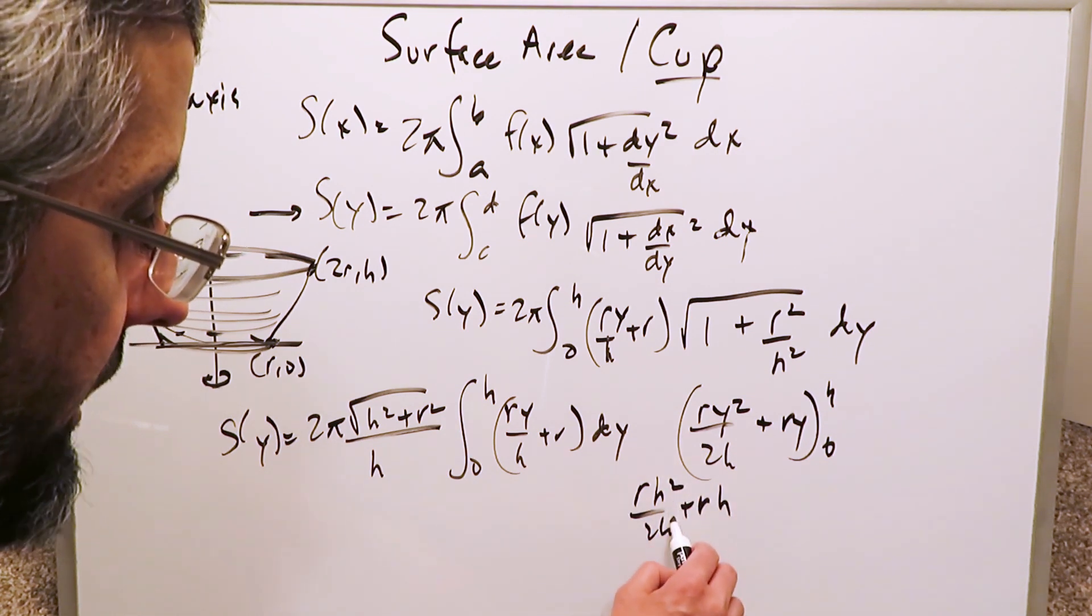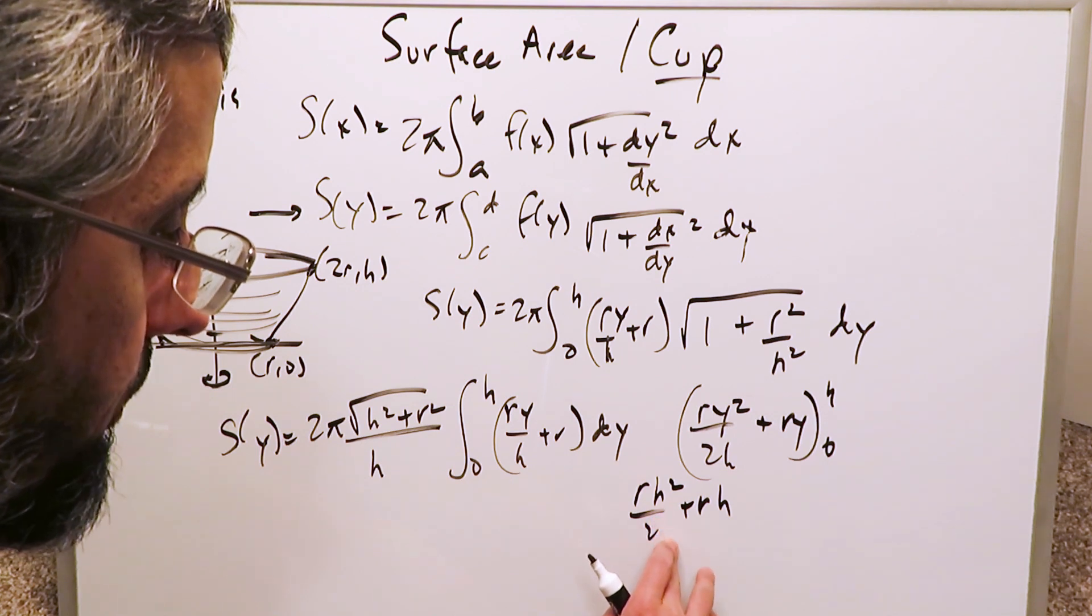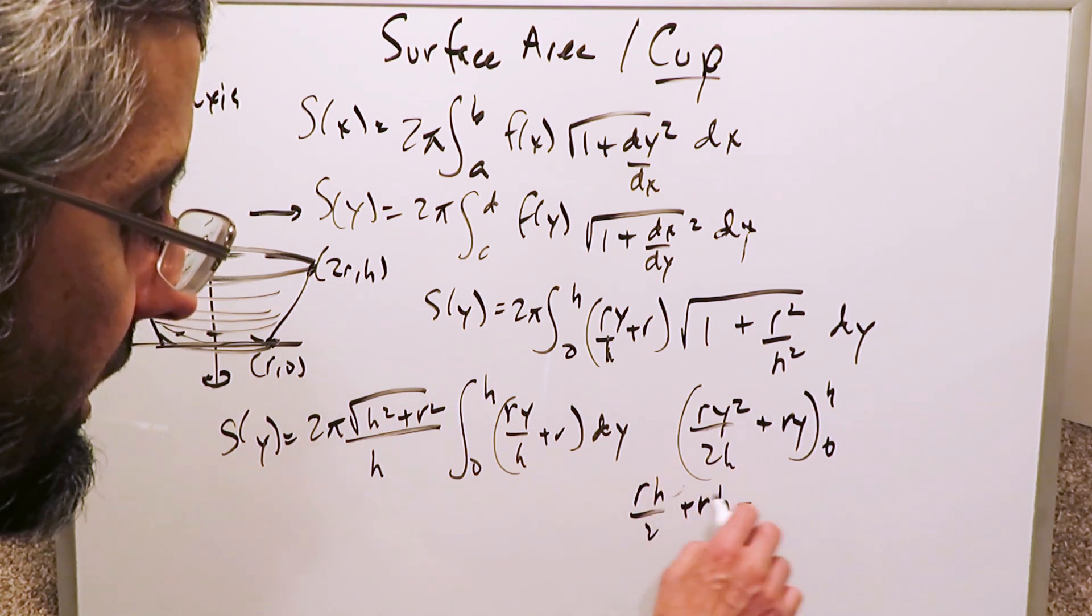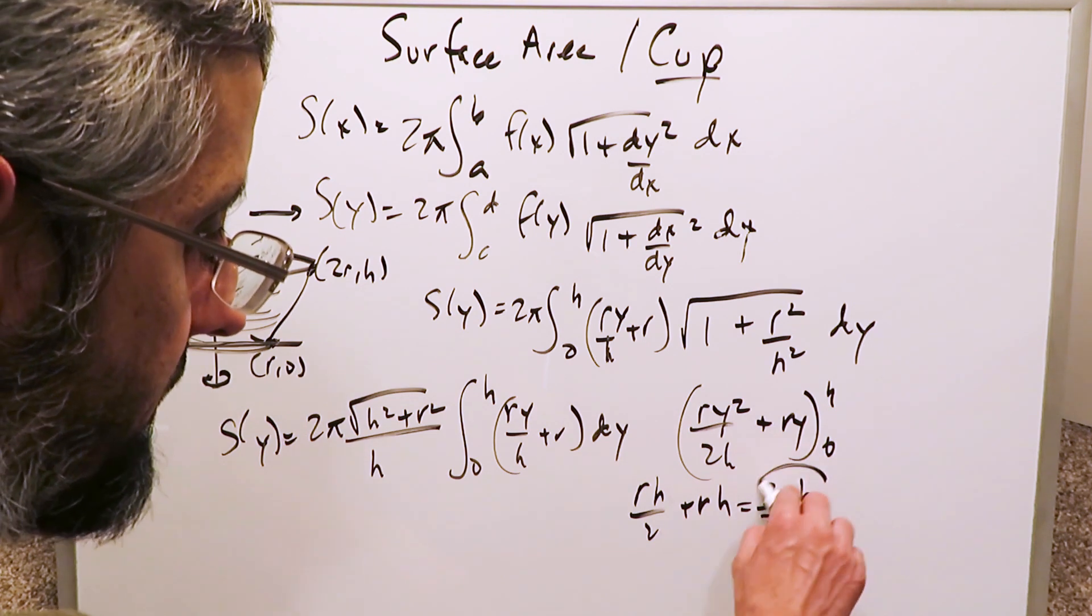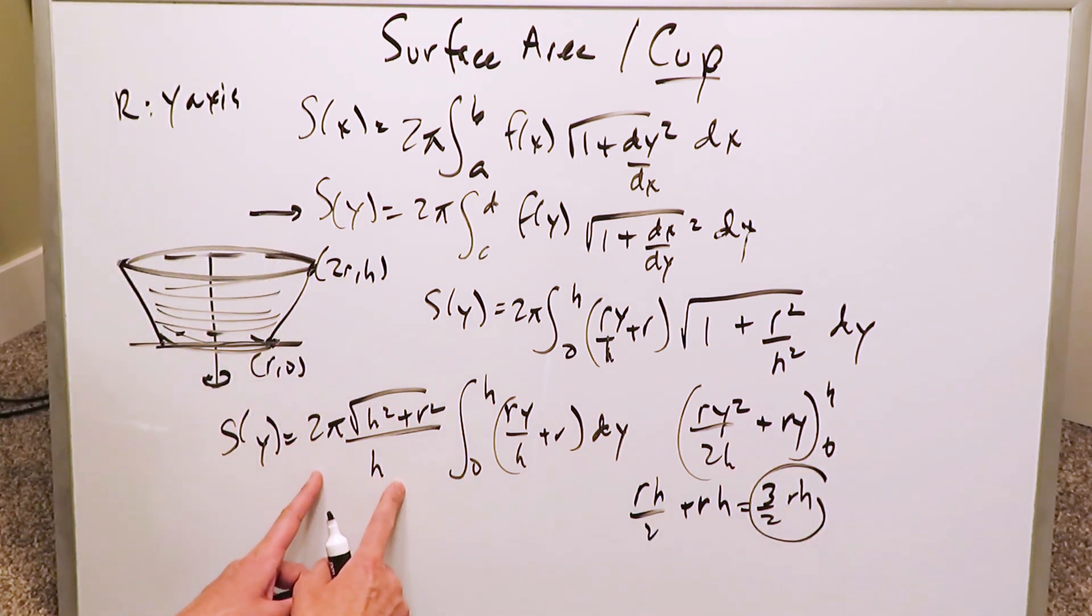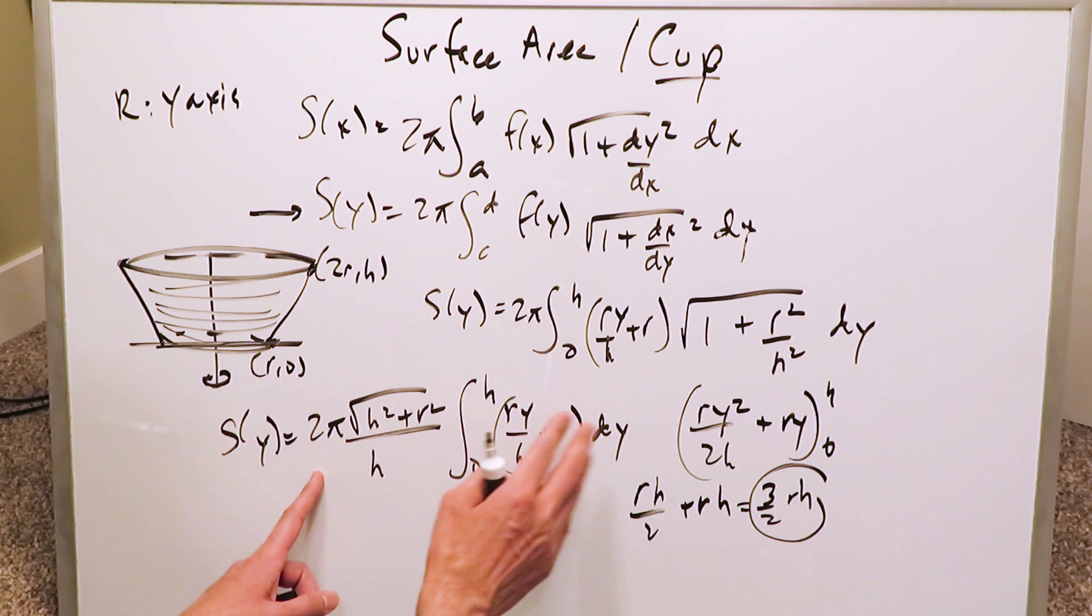When you simplify this, you end up seeing rh/2 plus rh, which is like a half and a whole, that gives you (3/2)rh. This (3/2)rh can be attached right here to the beginning part. So let's do that.